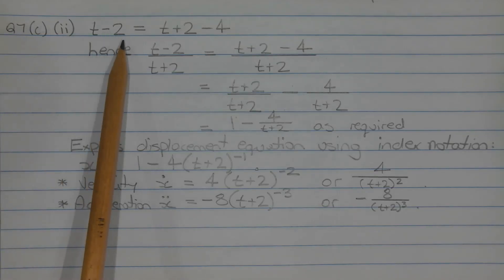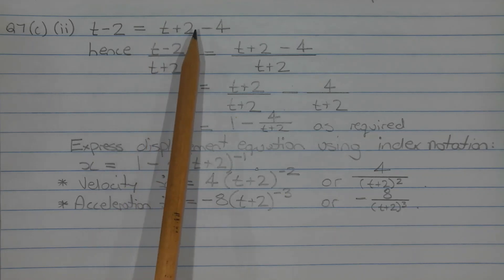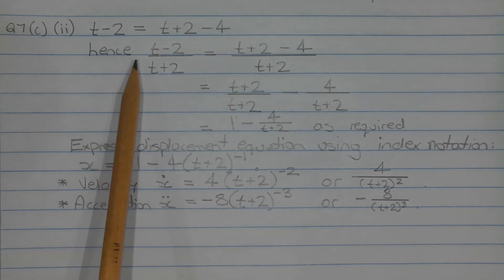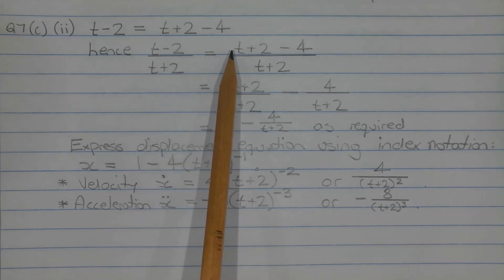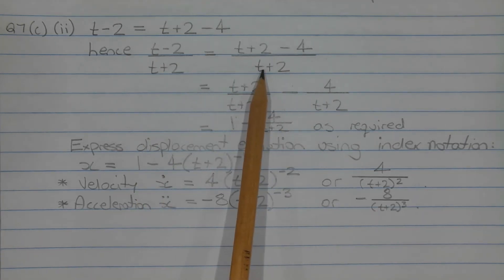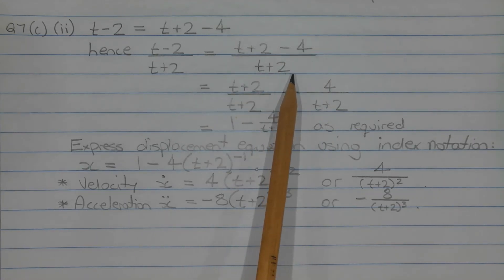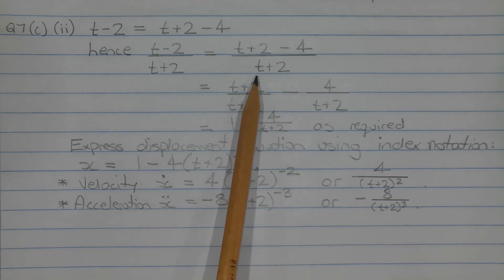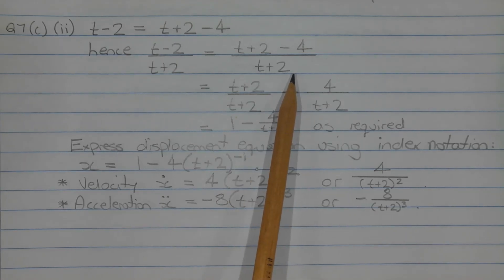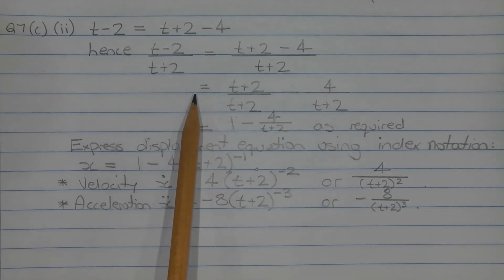The numerator t minus 2 can be written as t plus 2 minus 4. Hence the fraction t minus 2 over t plus 2 can be written as t plus 2 minus 4 over t plus 2. The next step is to express this single fraction as a difference of two fractions with a common denominator of t plus 2. So t minus 2 over t plus 2 is equal to t plus 2 over t plus 2 minus 4 over t plus 2, which equals 1 minus 4 over t plus 2 as required.